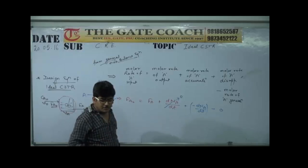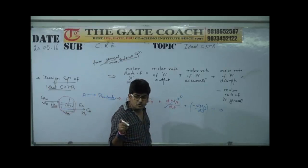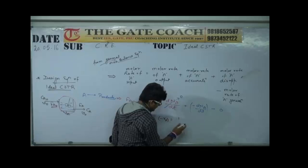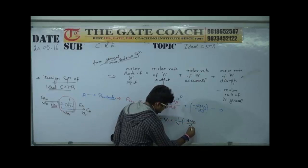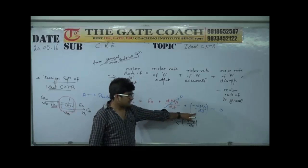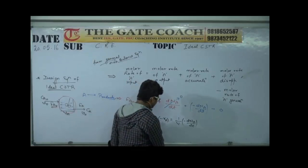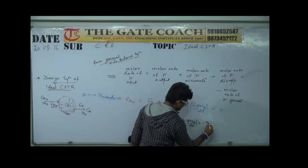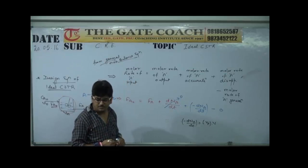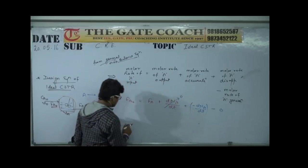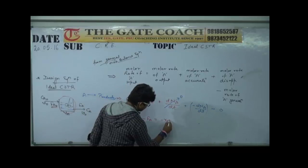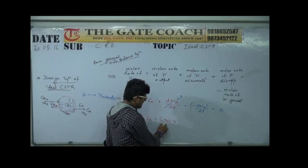From the rate equation for component A, defined for unit volume of reaction mixture, we write: minus rA equals minus (1/V)(dNA/dt). Where dNA/dt is the molar rate of A disappearance. So the molar rate of A disappearance becomes minus rA times V. The final mole balance equation becomes: FA naught minus FA equals minus rA times V, which we can write as rA times V.